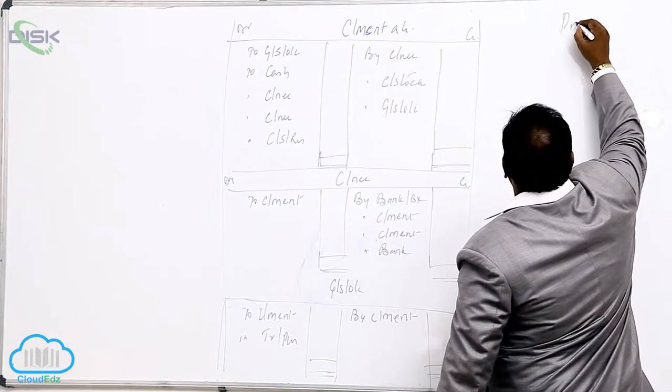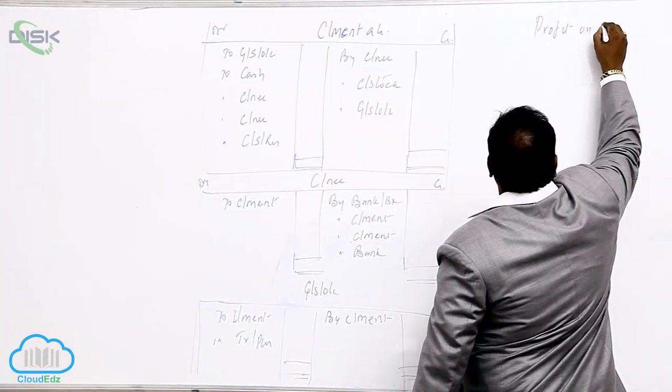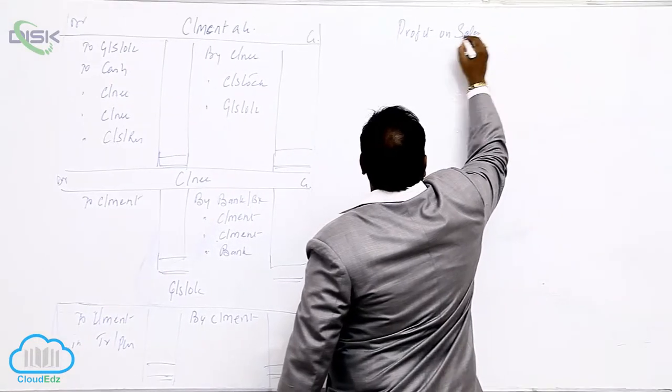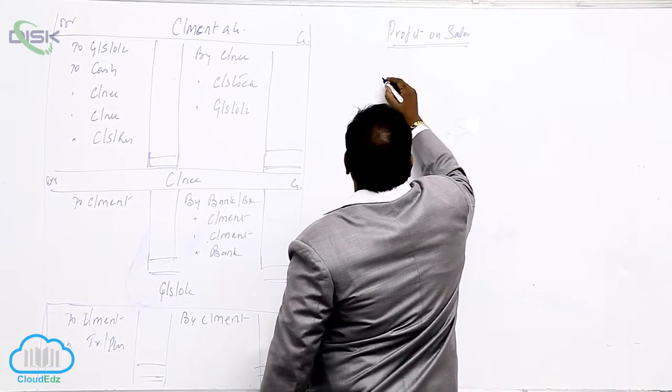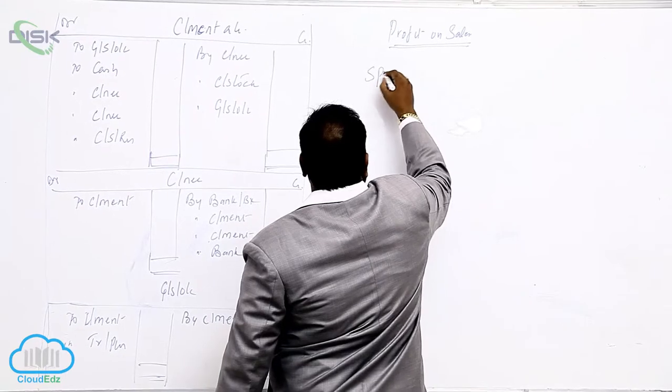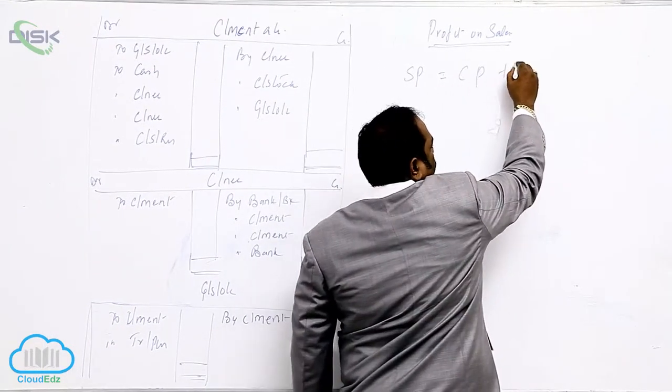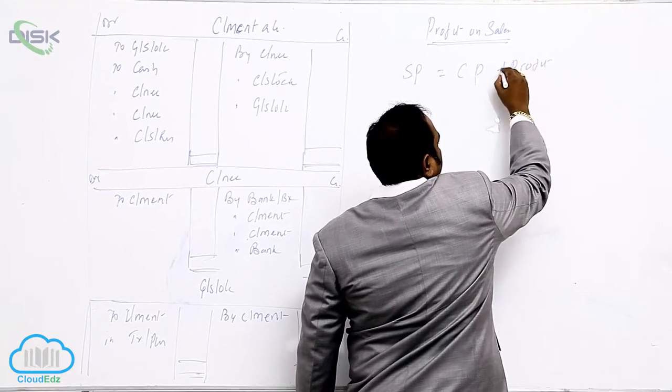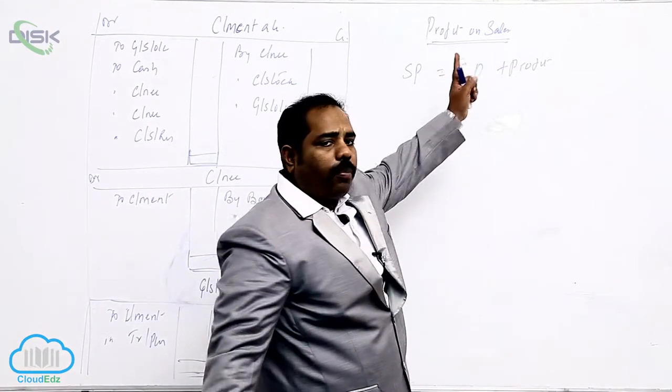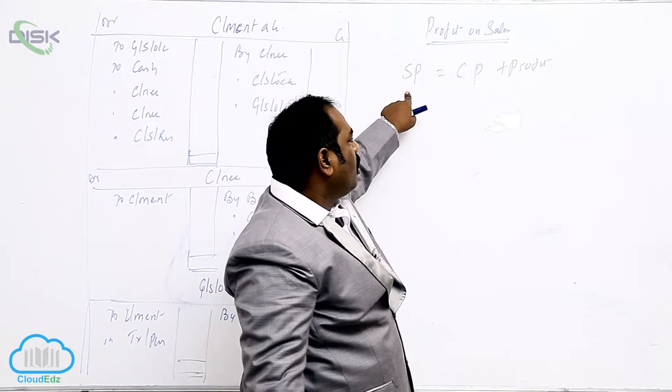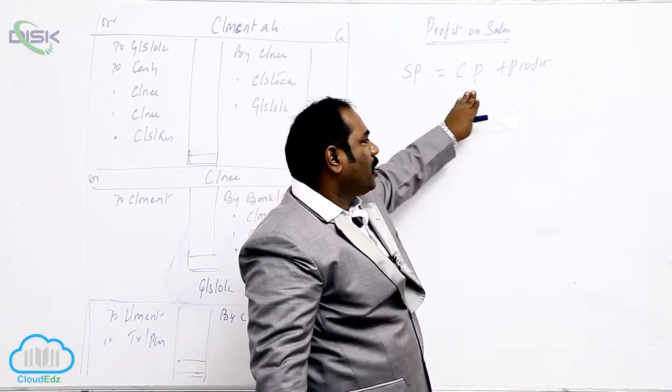When I use the word profit on sales, this is the next case. Always use the equation: selling price equals cost price plus profit. Whenever I use the word profit on sales, always use this equation. Selling price equals cost price plus profit.